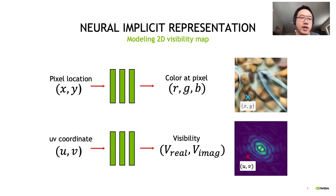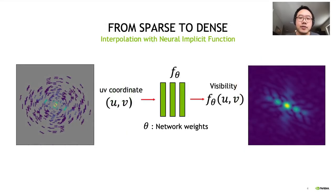In our case, the input is a real value UV coordinate, and the output of the network is a complex valued visibility at the corresponding UV coordinate. Given the sparsely sampled UV visibility in the spectral domain, our goal is to recover the dense UV visibility.